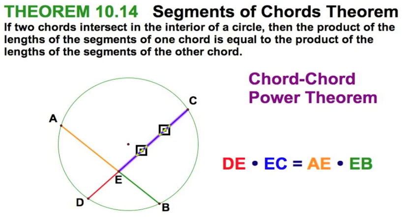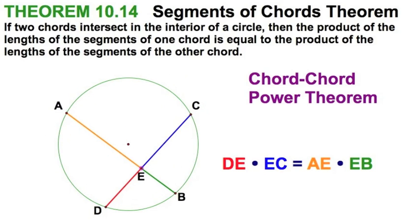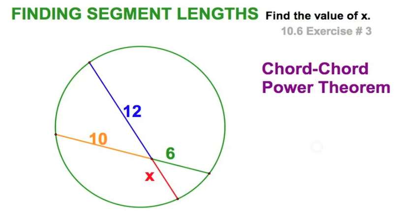Red times blue equals orange times green too. So that's it. And we'll do a sample of this straightaway. Okay, let's work out our first sample of a chord-chord power theorem.